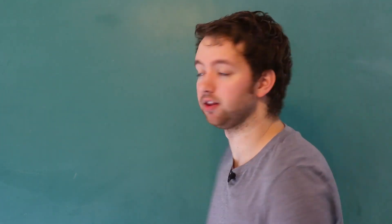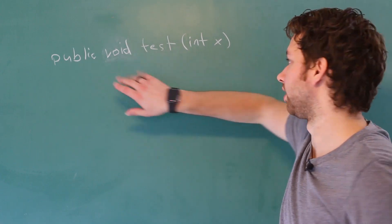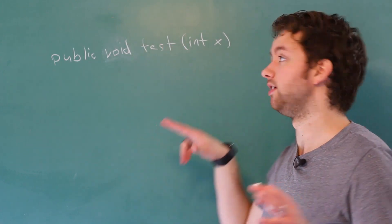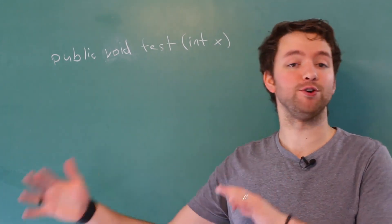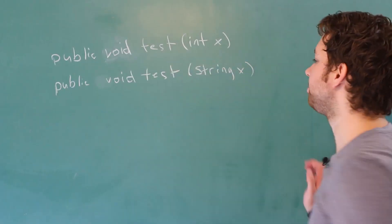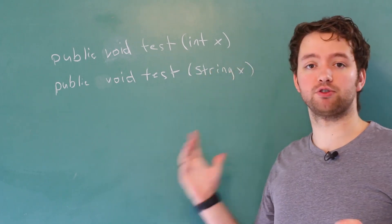So for example, let's say we had a method like this. It's public void, doesn't return anything, and it has the name test and has one parameter, an integer x. Well we could actually create a second version of this method that has a different parameter. In this situation the parameter is of type string.